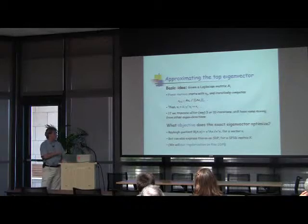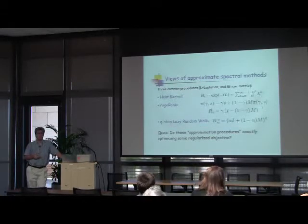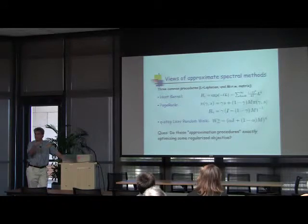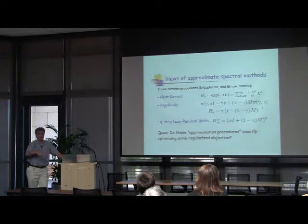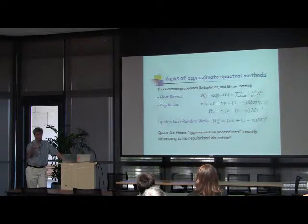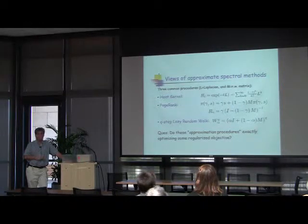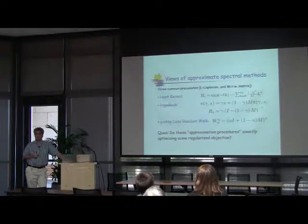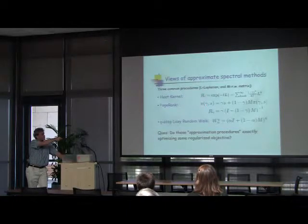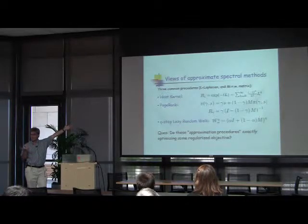Variants of this are what's done in practice. There are a bunch of different diffusion-based versions: the heat kernel, where you put some mass and run for T time steps; PageRank, where you diffuse around with a global teleportation parameter; and q steps of a lazy random walk, which is the power method except it's a little bit lazy — you do three or four or five or twelve steps. So the question is: if I run for some number of time steps, or jump with some probability, or do only three steps of the power method, approximating the Rayleigh quotient — do I exactly solve some other problem, a regularized version of the Rayleigh quotient?